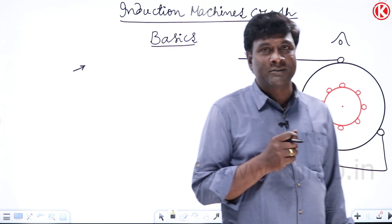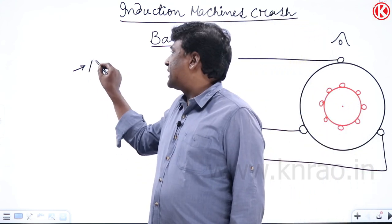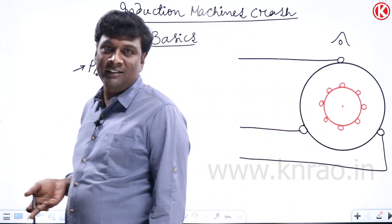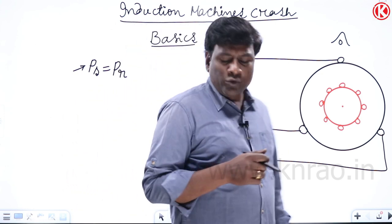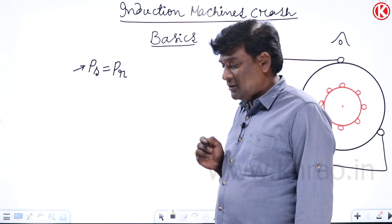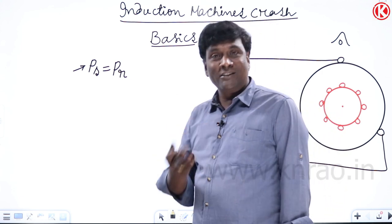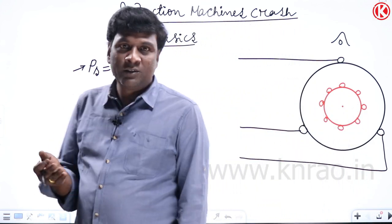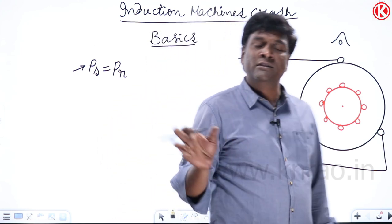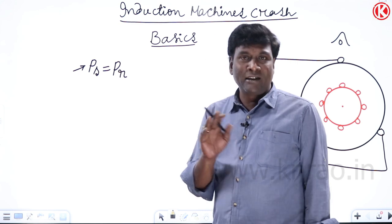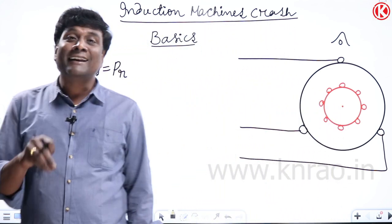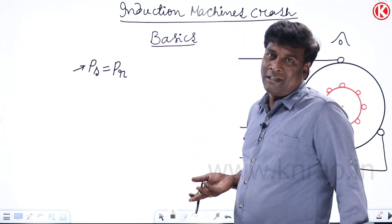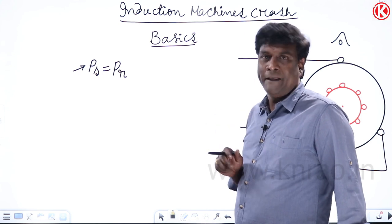In order to have continuous electromagnetic torque in all rotating machines, two conditions must be met. First condition: the number of poles of the stator and the number of poles of the rotor should be the same — independent of whether it is an induction machine, DC machine, or synchronous machine.